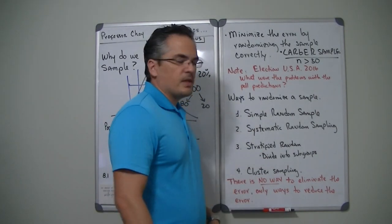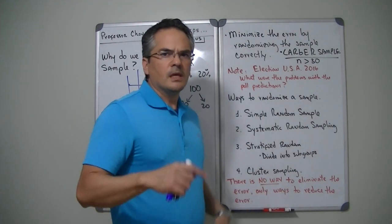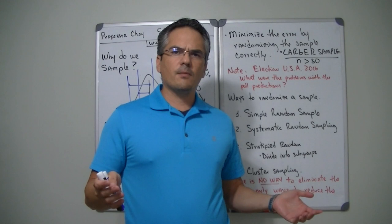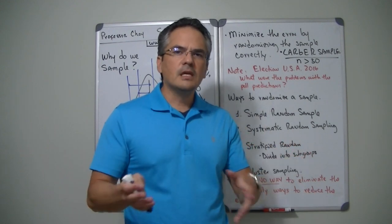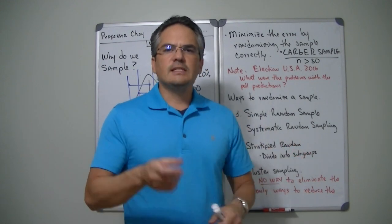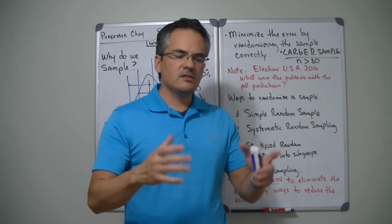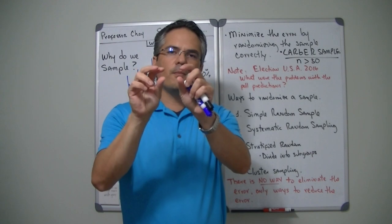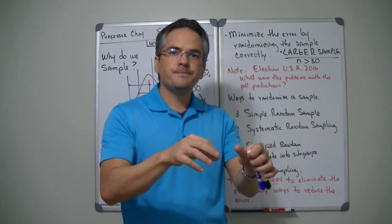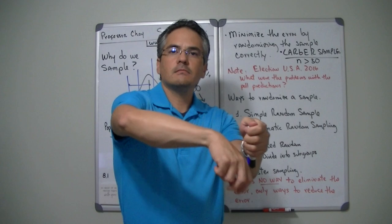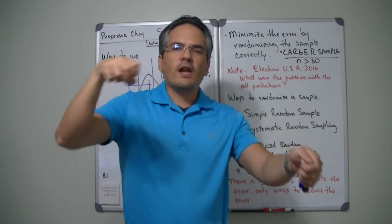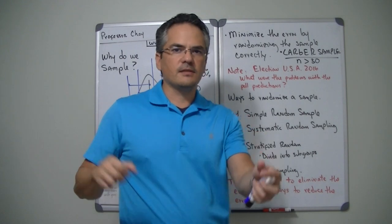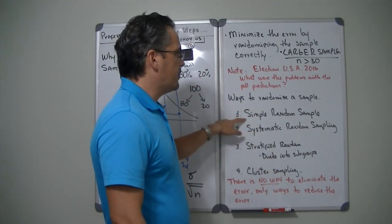A simple random sample is as simple as it gets. Imagine I have a thousand employees in my company and I want to collect a random sample. One thing I could do is put all the employees' IDs on a hat — a thousand pieces of small paper — and then collect from the hat whatever amount of people I want to sample. That's what we call a simple random sample.